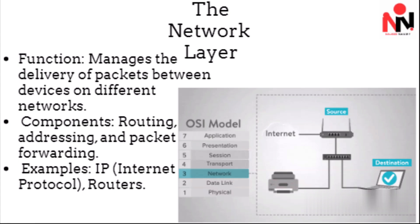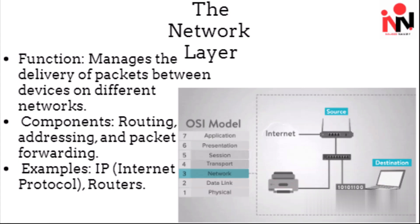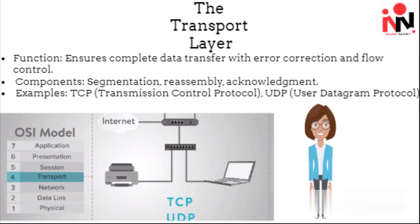The network layer manages the delivery of packets between devices on different networks. The components include routing, addressing, and packet forwarding. Examples include IP (Internet Protocol) and routers.